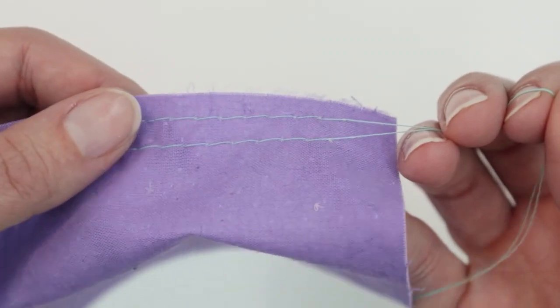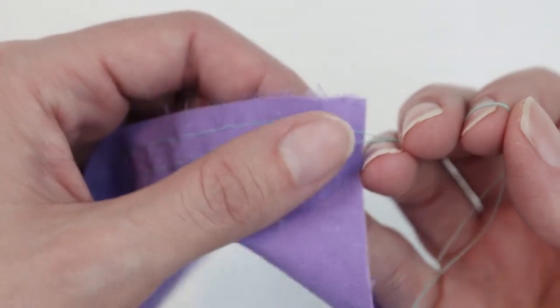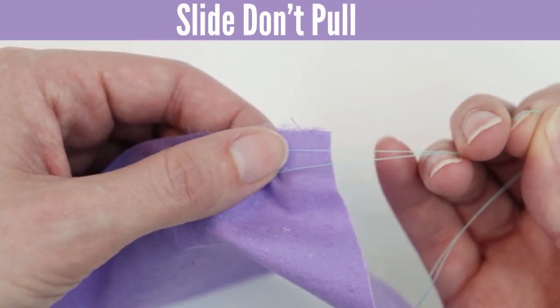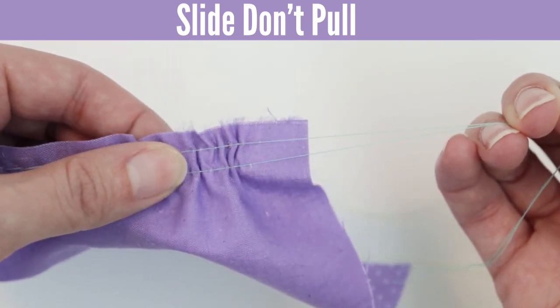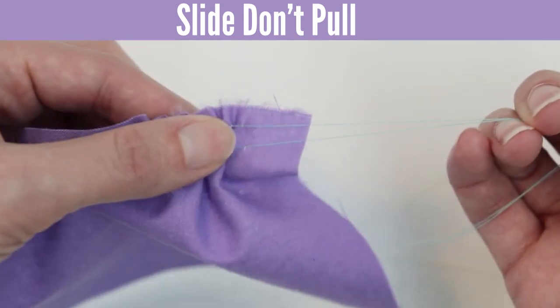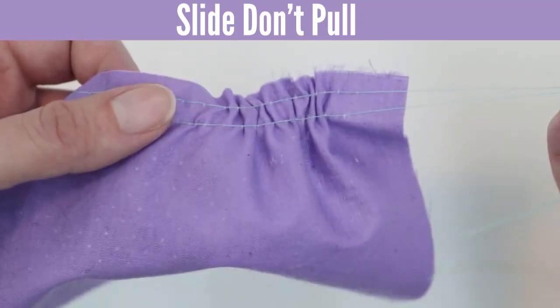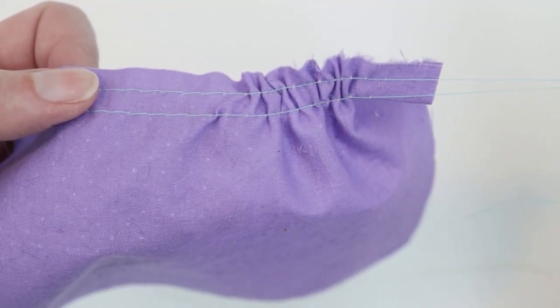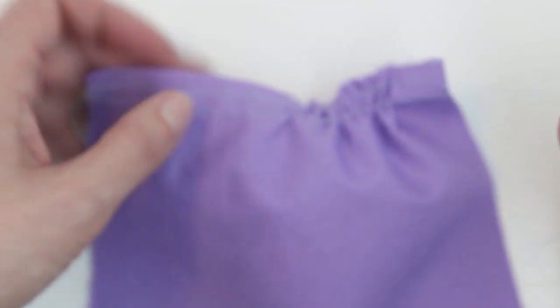And rather than pulling the thread I'm going to slide the fabric. So I'm holding the blue thread in place and I'm sliding the fabric down. And you can see how the fabric starts to gather. I like to do this half from one side and half from the other so that I don't accidentally slide the gathers off the fabric.